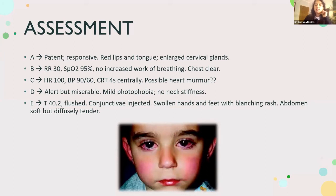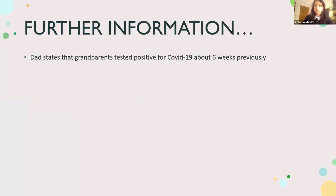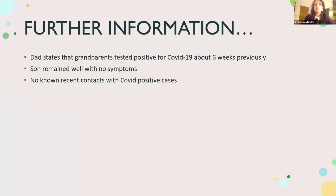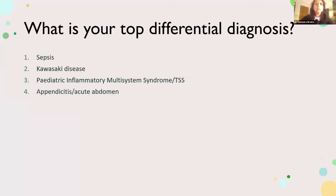His face shows red flushed appearance with non-purulent conjunctivitis. Dad volunteers that the child's grandparents tested positive for COVID-19 about six weeks previously but the child remained well with no symptoms, and there have been no recent COVID-positive contacts. Based on this assessment and history, what is your top differential diagnosis?